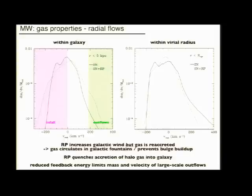If you look at the radial flows, again within the galaxy and within the virial radius, here I shaded the regions corresponding to inflow and outflows. Out of the galaxy we see that with radiation pressure the distribution of the radial velocities is much broader, so you have both more outflows, much more gas outflowing out of the galaxy and also more gas inflowing.